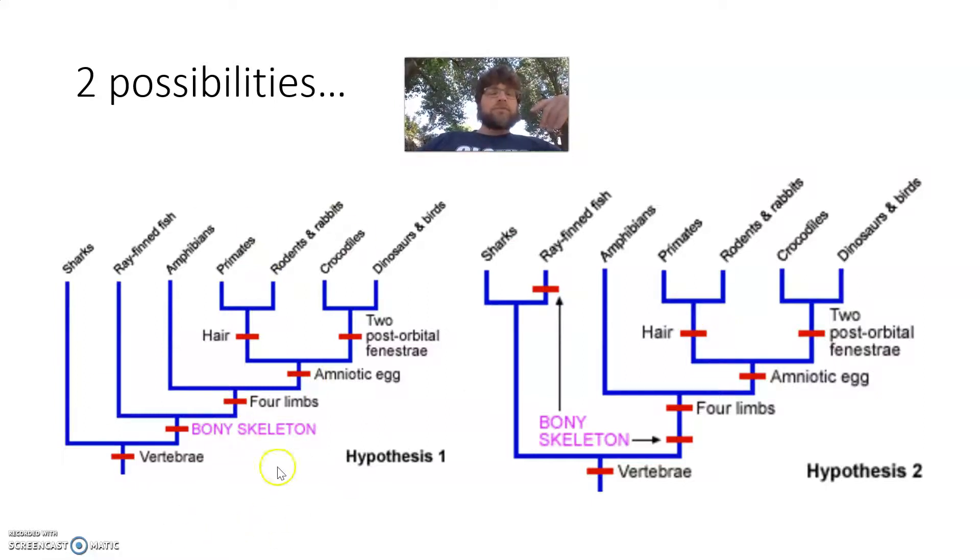In cladogram one, the rayfin fish has been placed so that this bony skeleton evolved in one time. It is the shared-derived characteristic popped up once. And then from here, the rayfin population diverged, and then another population diverged and created the amphibians and reptiles and birds and mammals we know today. Now, the other example, the rayfin fish was put with sharks. Visually, it makes sense. Sharks and fish, rayfin fish, they're both fish. It would make sense to put them together.